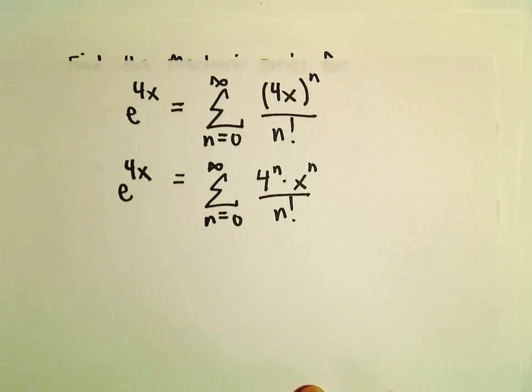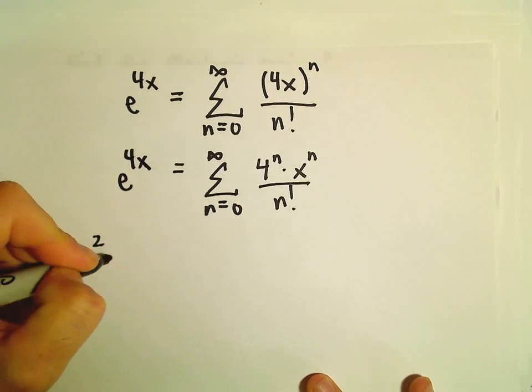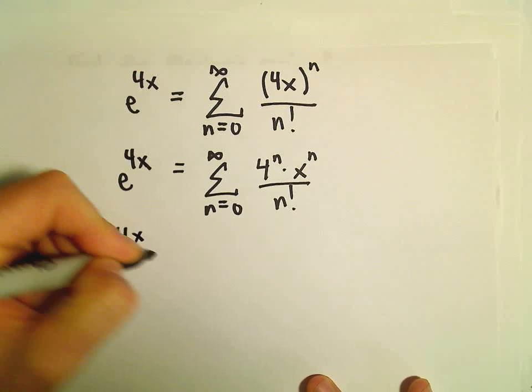We want to have x squared times e to the 4x. Well, that just means we have to multiply both sides by x squared.